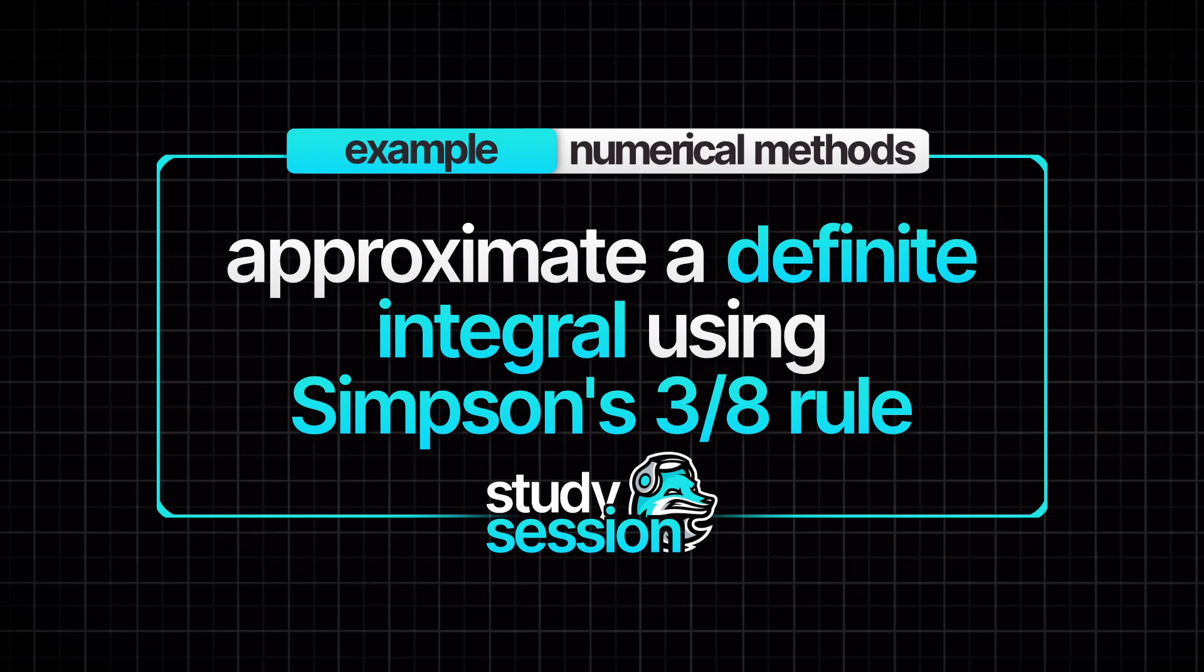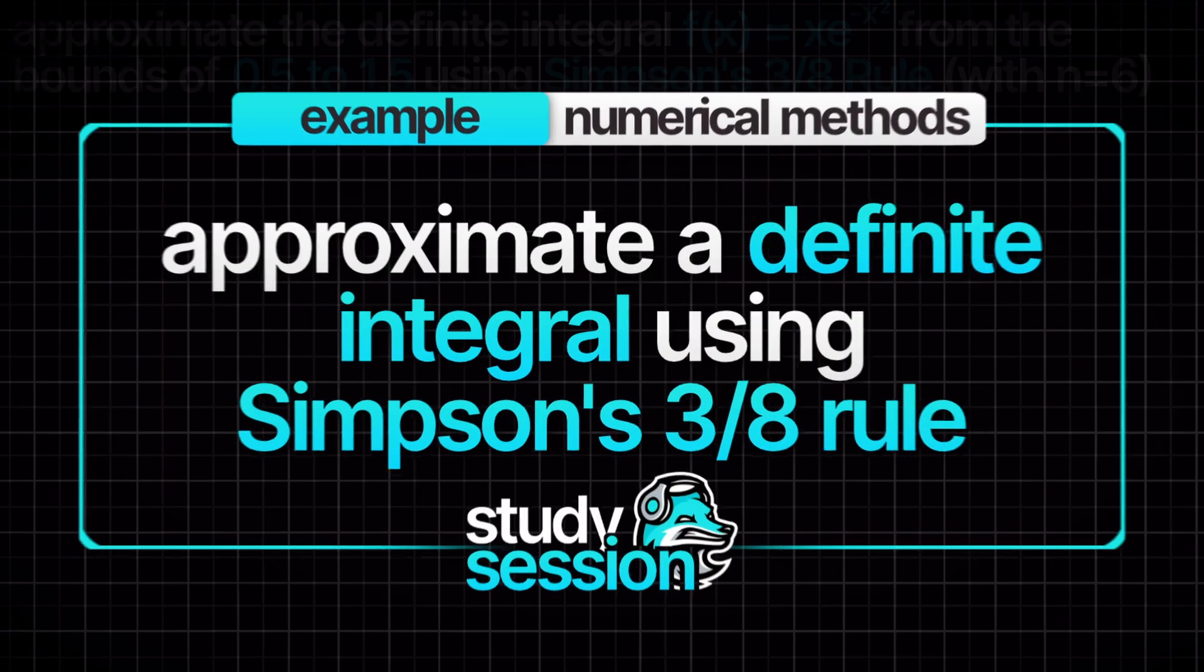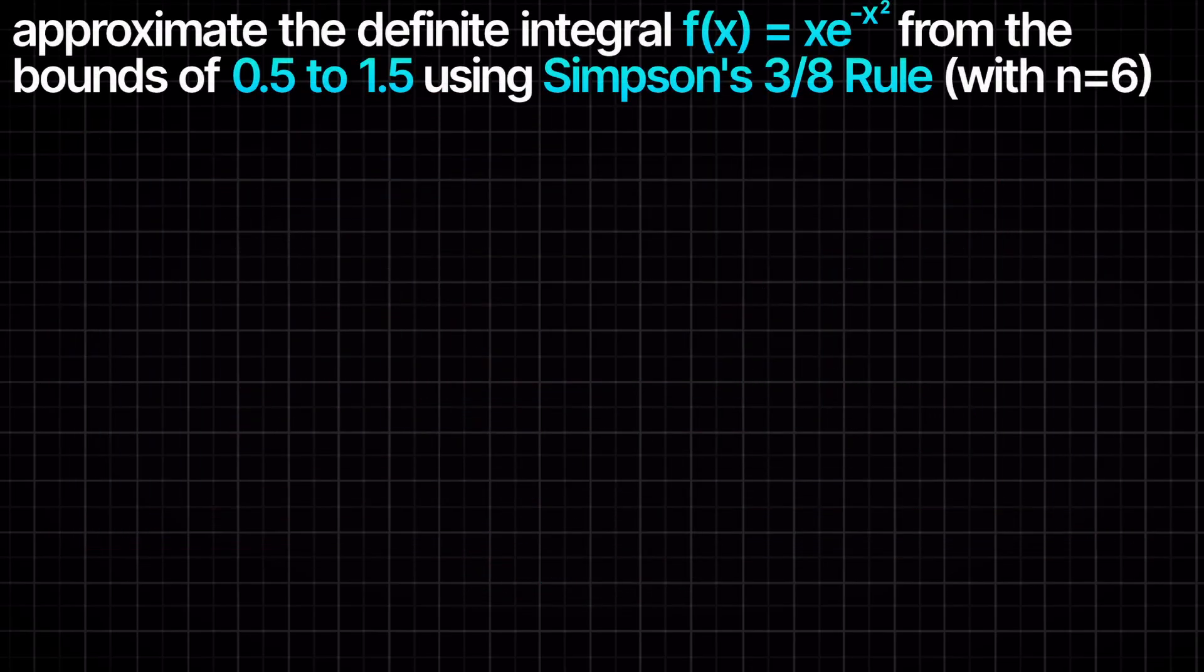Hey everyone, in this example video, we are asked to approximate the definite integral f(x) = xe^(-x²) from 0.5 to 1.5 using Simpson's 3/8 rule with n equals 6 intervals.